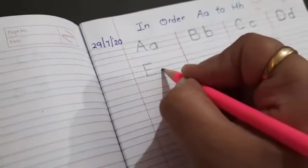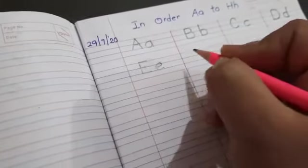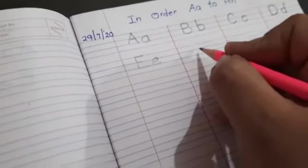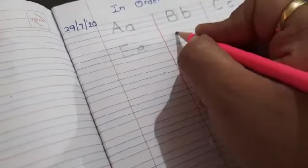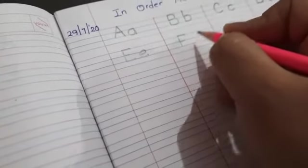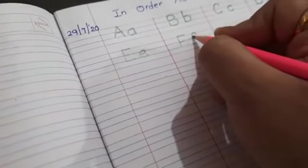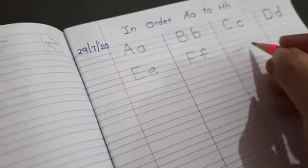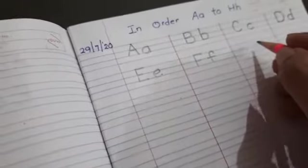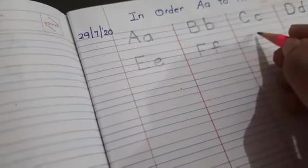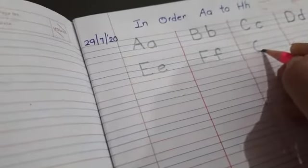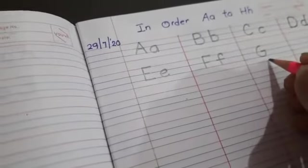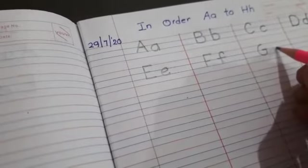And what comes after E? F. Capital F. Now we will write small f. What comes after F? G. Let us write capital G, like this. And now we will write small g.